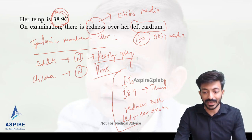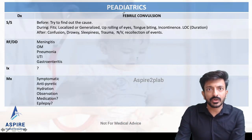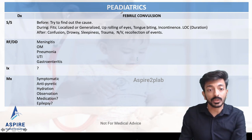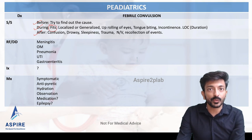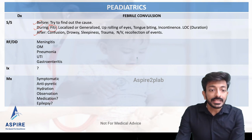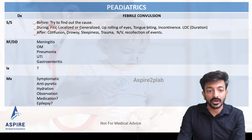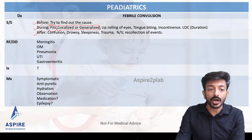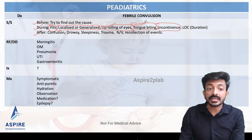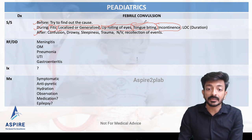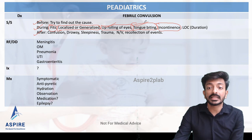We're discussing febrile convulsion in this OSCE station. Whenever we have a fit, we take history covering before, during, and after. During the fit, we need to ask whether it was localized or generalized - whether only one part of the body was involved or it was generalized. We also need to ask about uprolling of the eyes, tongue biting, urine or stool incontinence, and whether there was any loss of consciousness.